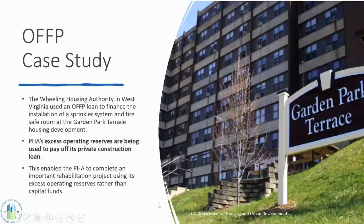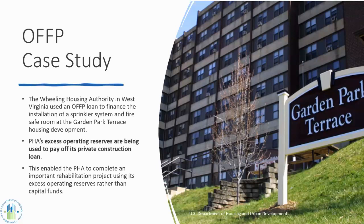There are lots of requirements and an application process to get HUD approval. You can learn all about those things by clicking on the Operating Fund Financing Guide. As an example: in Wheeling, West Virginia, the Wheeling Housing Authority had a large family development where they needed to install a sprinkler system and a fire safe room. They got a construction loan to pay for the project, and then used those excess operating reserves to pay off that loan. This was a great way for that housing authority to complete a very important capital improvement project.